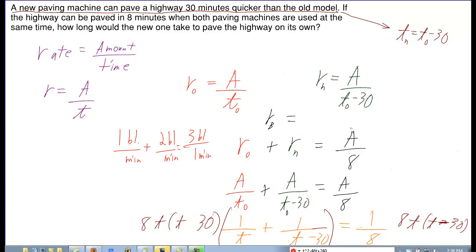Check out this crazy problem. A new paving machine can pave a highway 30 minutes quicker than the old model. So the first thing I notice is we can write a formula for that: TN is equal to TO minus 30.